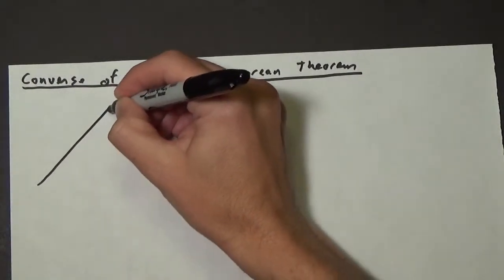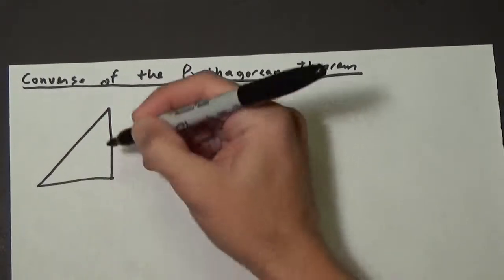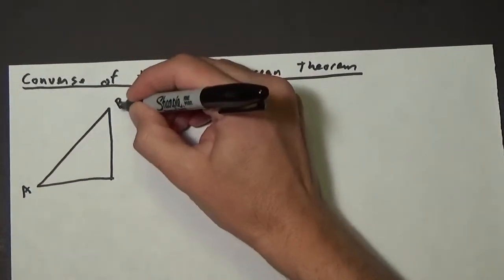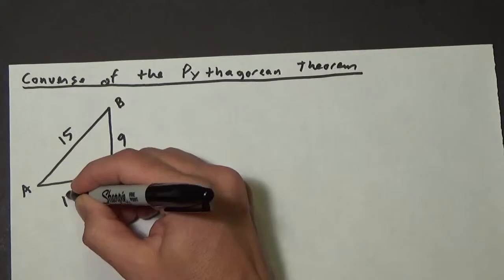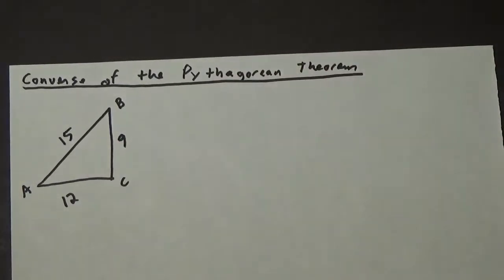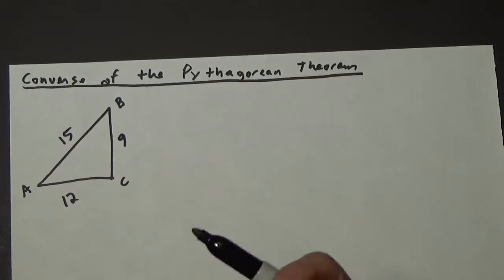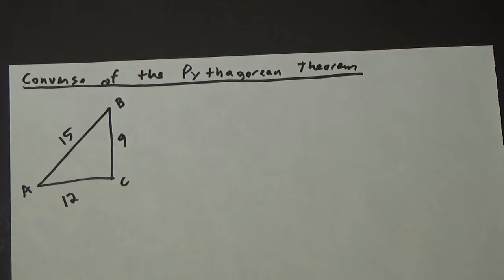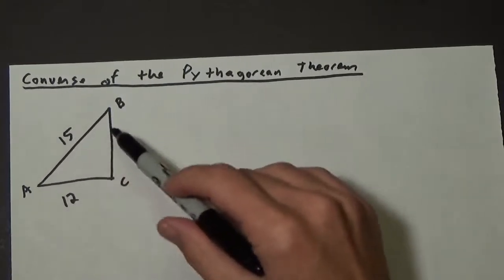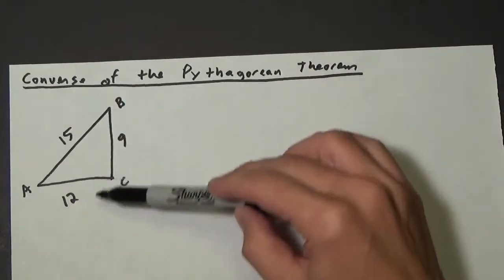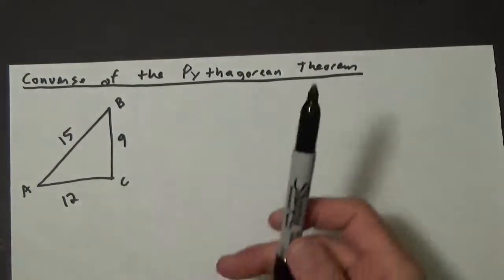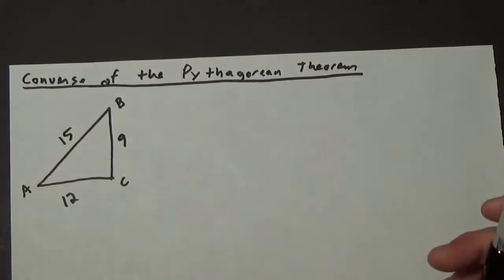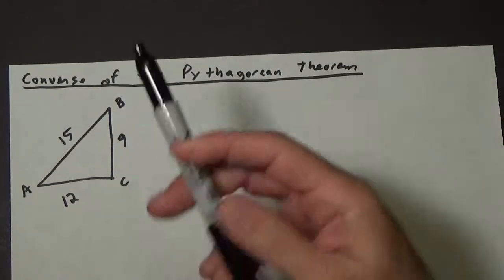The converse would state: let's say we have this triangle here with sides a, b, c — 15, 9, and 12. The Pythagorean Theorem states that if we have a right triangle, then a squared plus b squared equals c squared. The converse states: if a squared plus b squared equals c squared is true — and you can check that it works here — is it a right triangle? So basically, we're going backwards. Instead of being given a right triangle and knowing the sides are related, if the sides are related, do we have a right triangle?